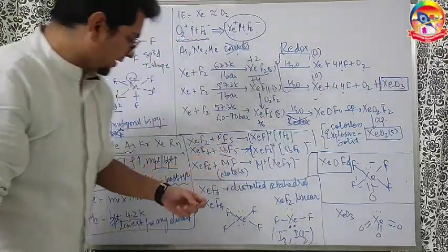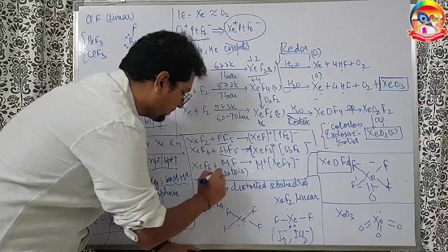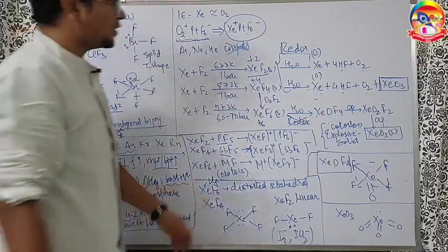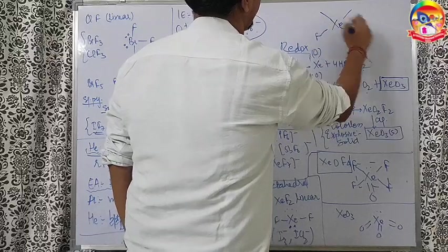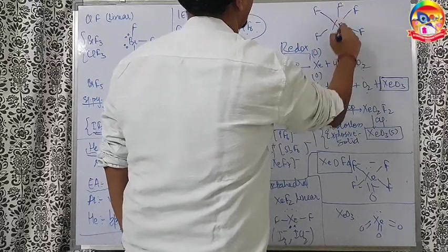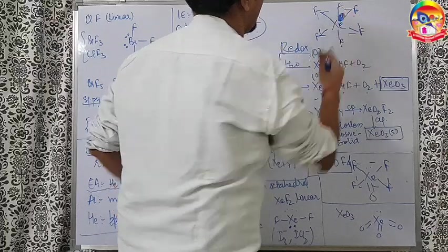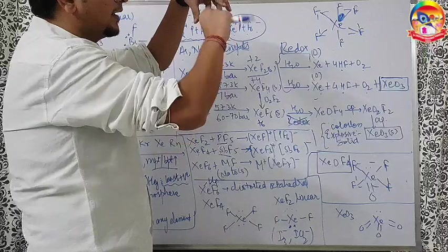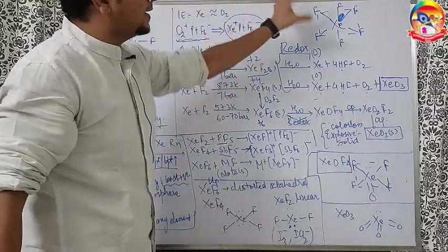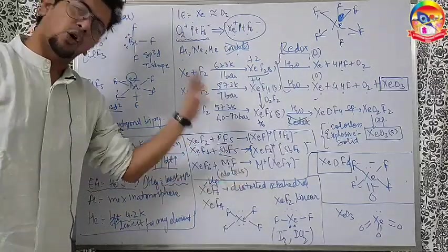Talking about the structure, XeF6 is distorted octahedral. How many lone pair on the central atom? One lone pair is there on the central atom. This is Xe, F, F, F, F, F, F. This is octahedral and one lone pair is there inside the box. Octahedral is like a box here. Inside the box, one lone pair is there, which keeps on flipping, but it remains inside the box only for most of the times. That is why it is called distorted octahedral.